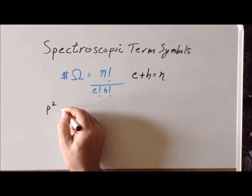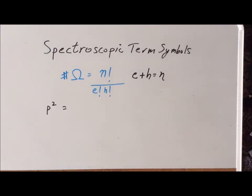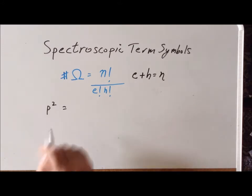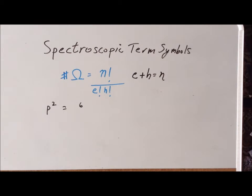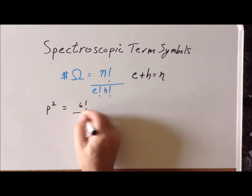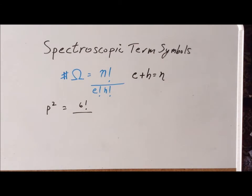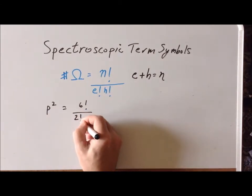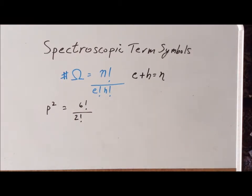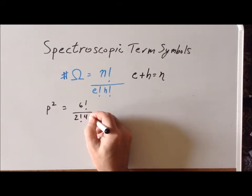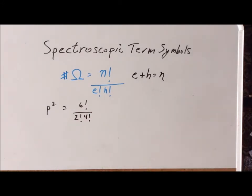We recognize that in the p orbitals, we have three p orbitals, and each can hold two electrons. So for a p2 configuration, n is equal to six, and our numerator will be six factorial. The total number of electrons, e, is equal to two, so we have two factorial. The number of holes — the empty spaces where there could be an electron but there isn't — is equal to four, giving us four factorial as the final term in our denominator.